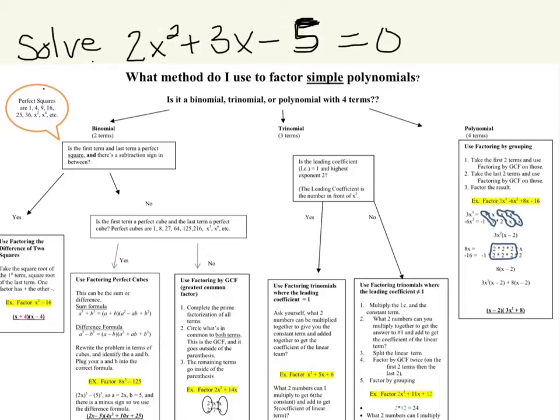If you look on my website you have this factoring organization sheet from our section 1.5, and the way we use this is the first thing we ask ourselves is: is it a binomial, trinomial, or polynomial with four terms?